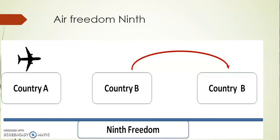So there are nine Freedom Acts as per the Chicago Convention — Freedoms one through nine, with one modification given for the Sixth Freedom. To summarize: First Freedom — you can operate a flight across the airspace of a particular country; Second — you can make a technical stopover; Third — you can take passengers to another country; Fourth — you can bring passengers back; Fifth — you can connect two countries from your home country.